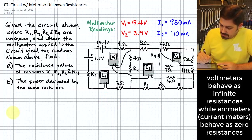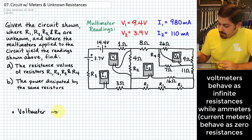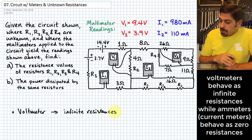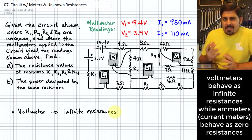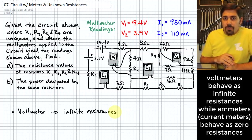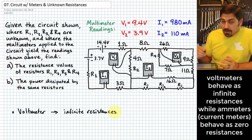A voltmeter basically behaves as if it has infinite resistance. What that means is that we can assume there is essentially zero current that will flow through any branches that are created by connecting a voltmeter. No current, or very negligible current, will flow on those legs of the circuit. That allows us to understand what goes on in the circuit when they are connected.